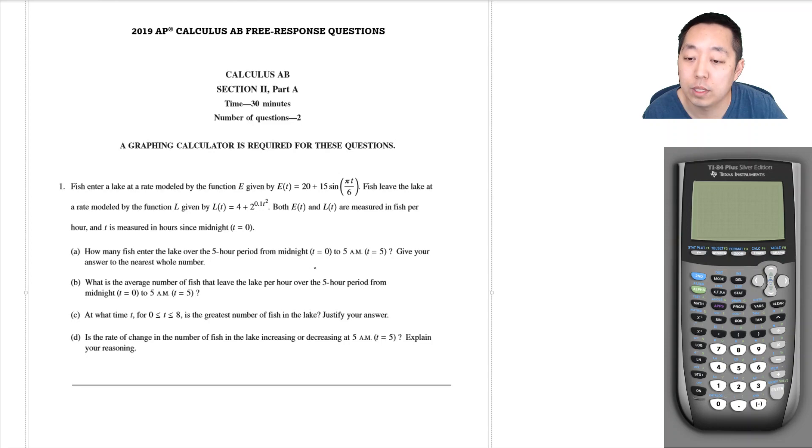How many fish enter the lake over a five-hour period from midnight? Okay, so entering would be the integral of the rate that they're entering, E(t) dt, and we would be integrating from zero to five.